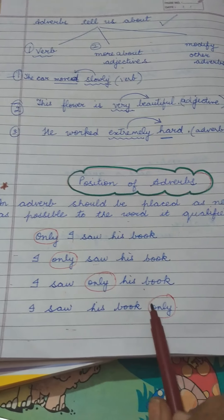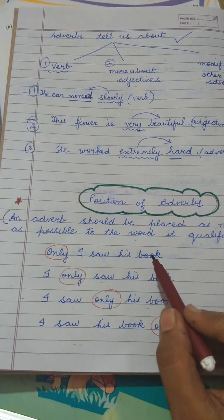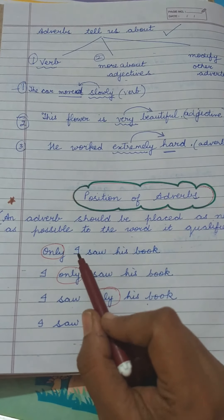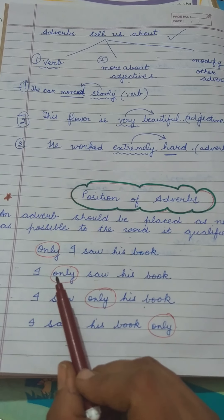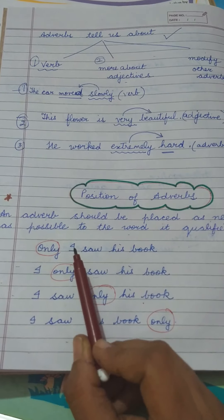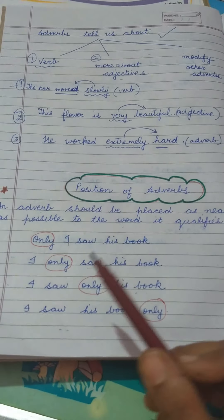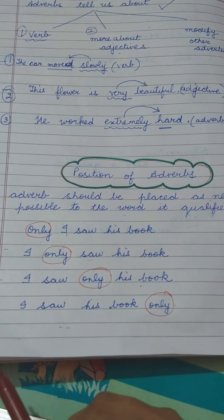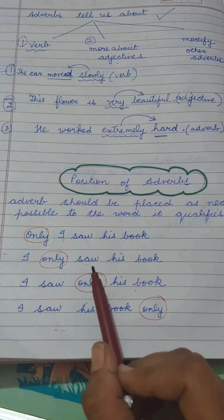See this example: 'Only I saw his book' — the adverb 'only' qualifies the nearest word. Here, 'only I' means no one else saw his book. Now, 'I only saw his book' — I only saw it, I didn't touch it. See how the position of the adverb changes the meaning of the sentence. 'Only I saw his book' means no one else; 'I only saw' means I didn't touch it.